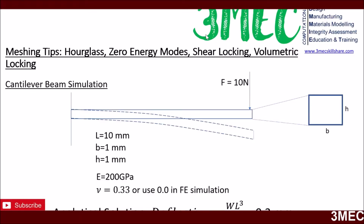Hi guys, welcome to this video. Today I have some questions related to meshing tips: what is hourglassing, zero energy modes, or parasitic shear strains? What is shear locking or volumetric locking, and how to eliminate them?